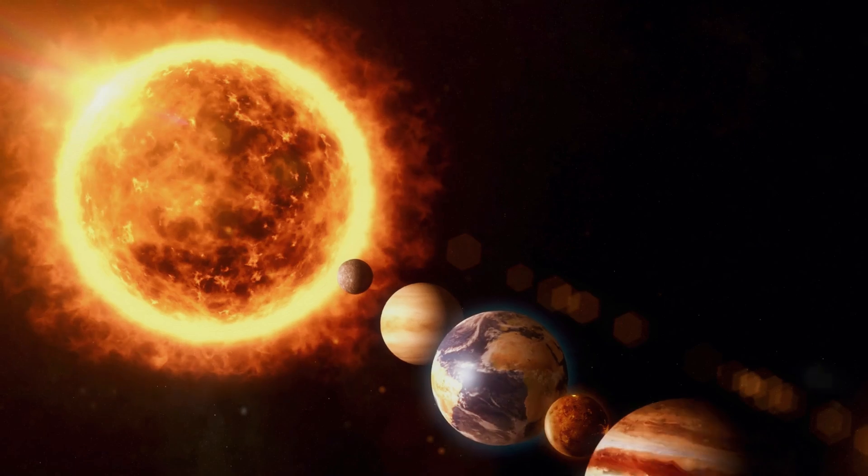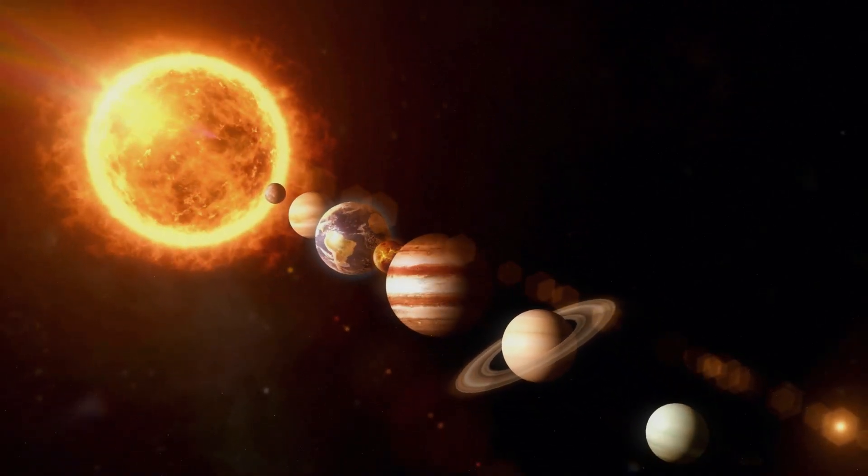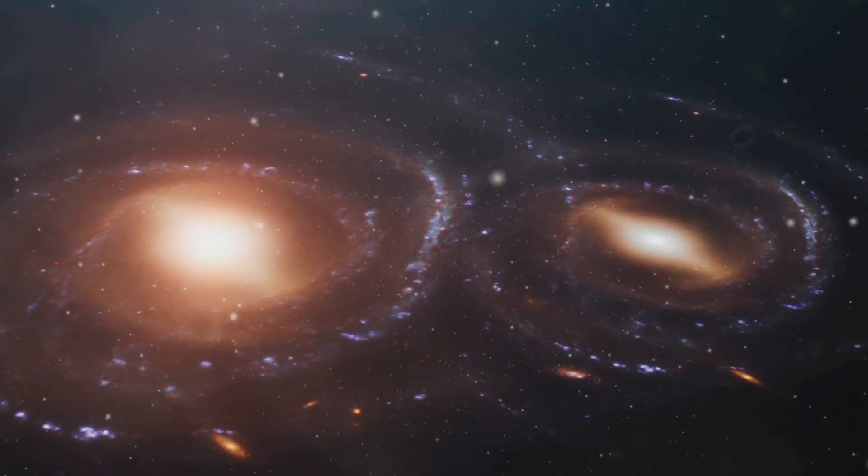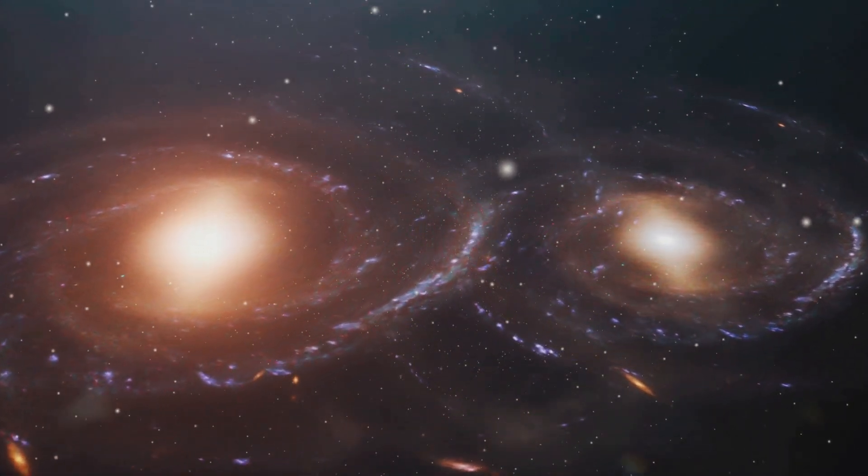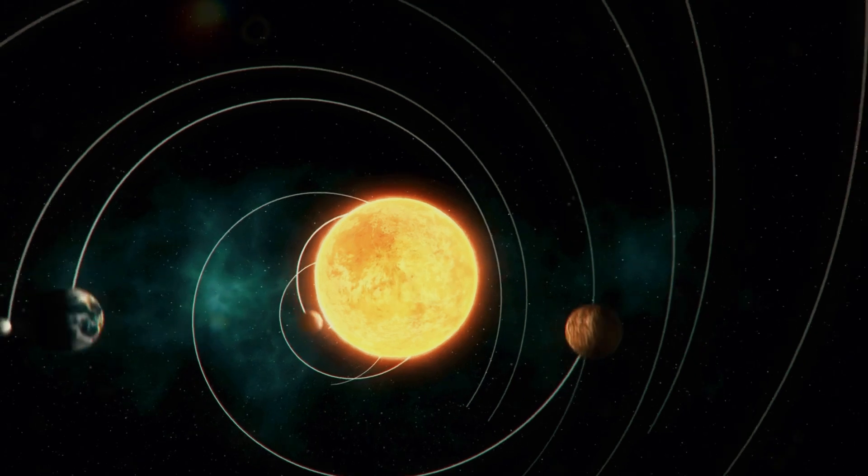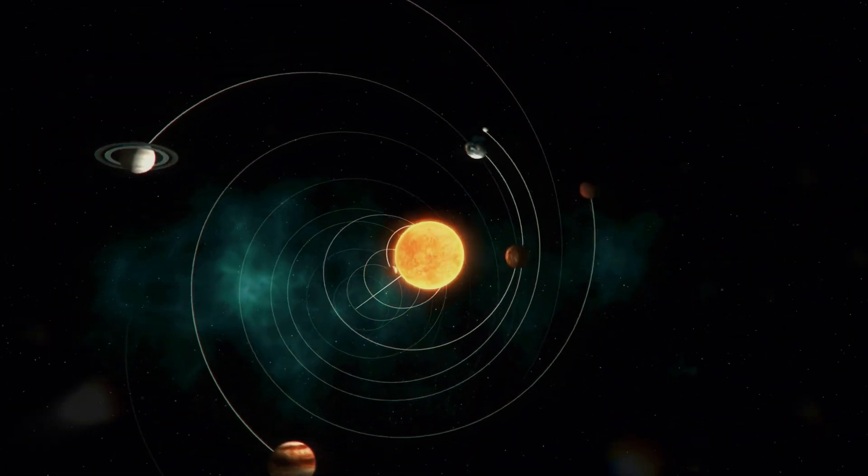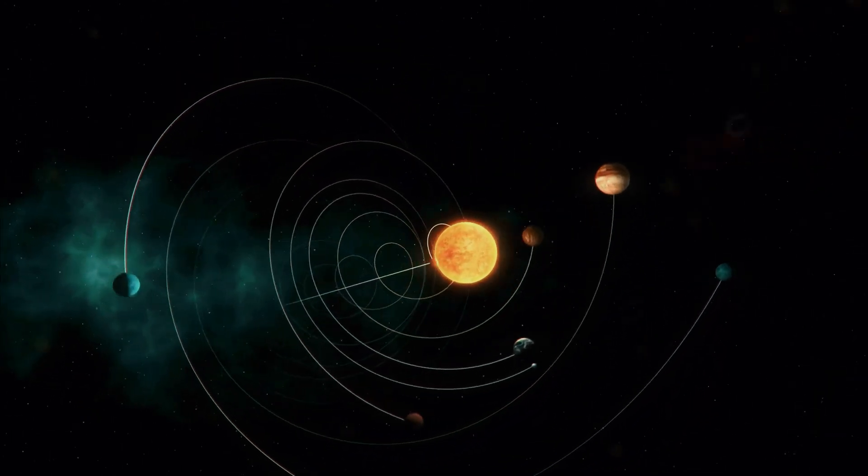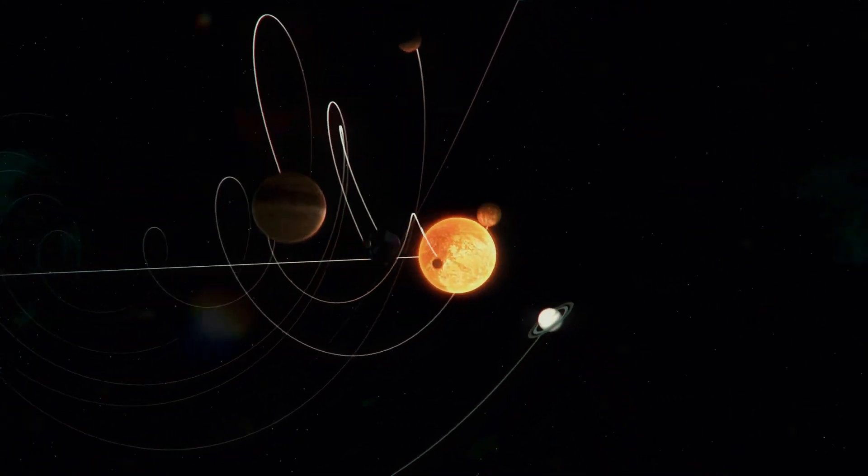So what happens to our solar system when galaxies collide? This is where things get a bit unsettling. When two massive galaxies like the Milky Way and Andromeda are on a collision course, the gravitational forces at play are staggering. These forces can disrupt entire solar systems, pulling them out of their orbits or flinging them into completely different parts of space. While it's unlikely that stars will crash into one another, solar systems are far from safe.